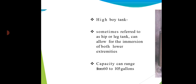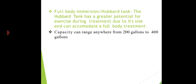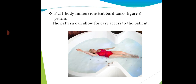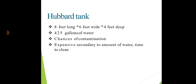The high buoy tank is sometimes referred to as a hip or leg tank, where an extremity can be immersed, with a capacity range of 60 to 105 gallons. Next is the full body immersion or Hubbard tank, which has a greater potential for exercise during treatment due to its large size. It can accommodate the full body, though chances of contamination are higher and it is very expensive.